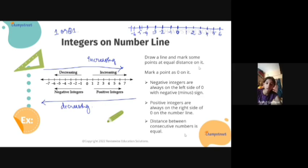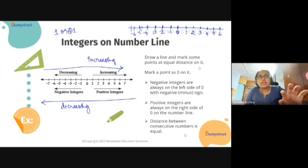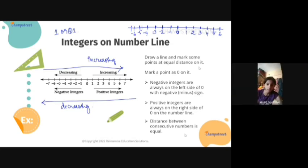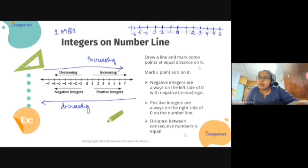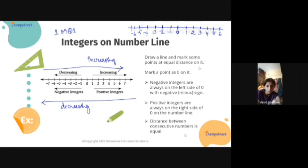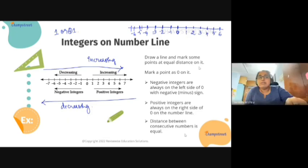Yes, I was also reading. Okay, so the concept of number line is clear to you? Yes. Any doubts here? No, but can you explain the last statement? Distance between consecutive numbers is equal. What do you mean by consecutive numbers?